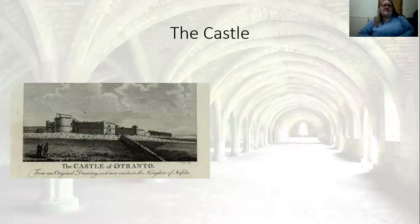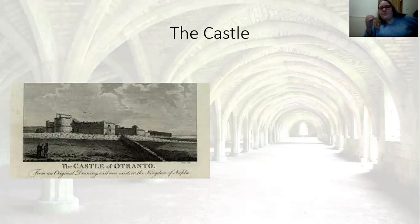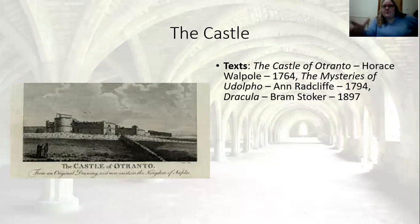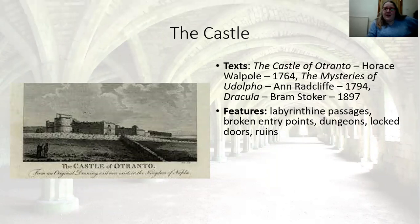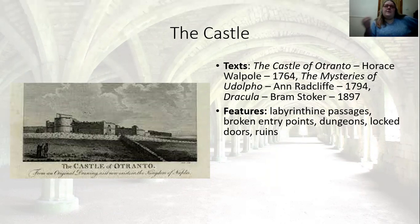Starting at the beginning: 1764. Everyone knows I always start here with the Castle of Otranto, but more broadly, the castle. Key examples: Castle of Otranto from 1764, Mysteries of Udolpho from 1794, and into the 19th century the castle recurs in Dracula by Bram Stoker. Features include labyrinthine passages, broken and porous entry points, dungeons, entrapment, locked doors and secrets, and an edge of ruin. These Gothic novels often reflect the British landscape of the 18th century, not the actual historical landscape of wherever they're set.